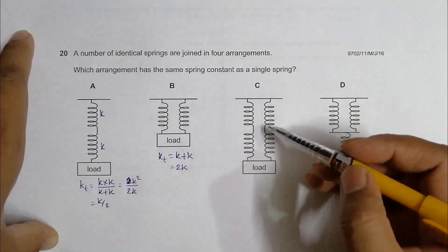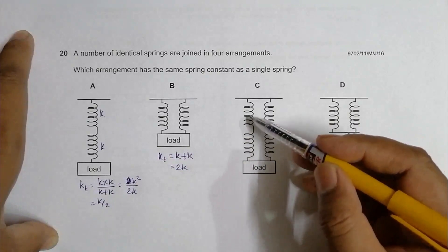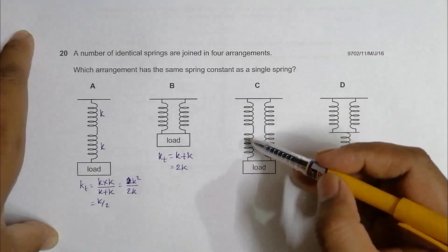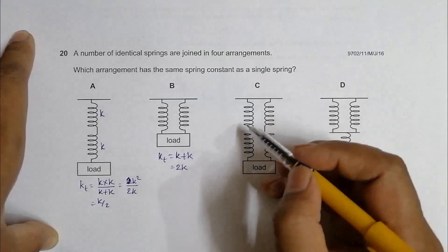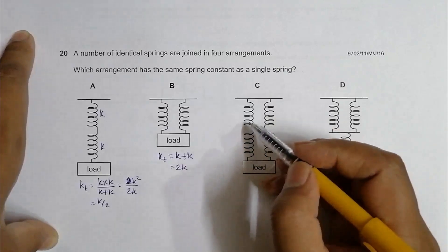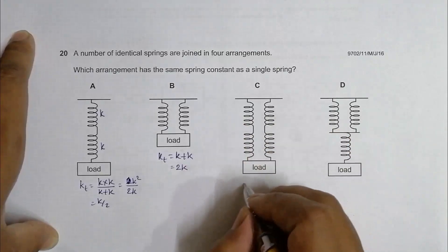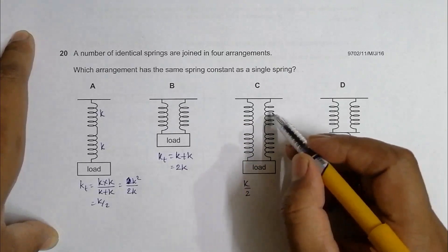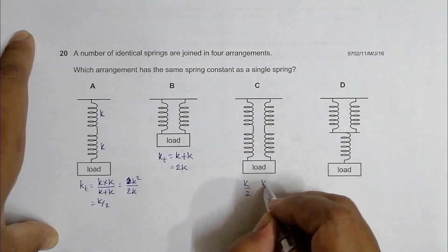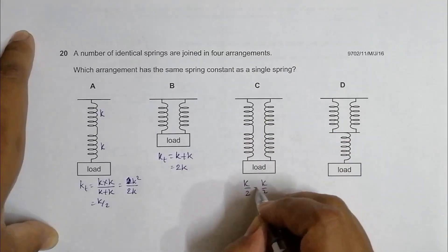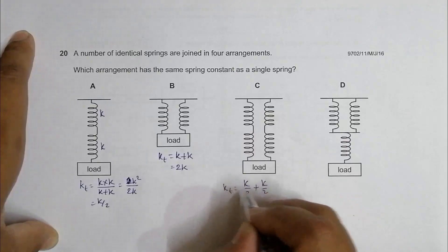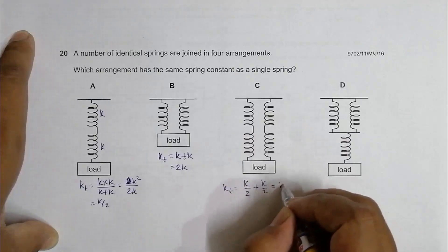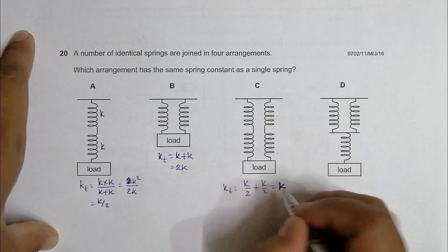In arrangement C, we have two sets: this pair in series and this pair in series, and these two series combinations are in parallel. The constant of each series pair is k over 2. So k_total equals k over 2 plus k over 2, which equals k. This arrangement has the same spring constant as a single spring.